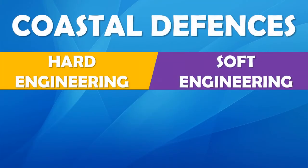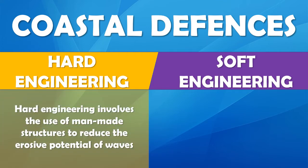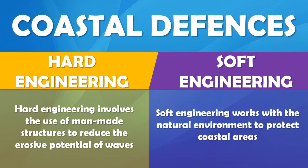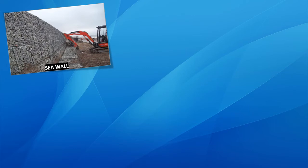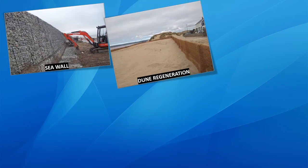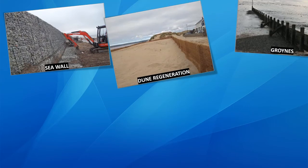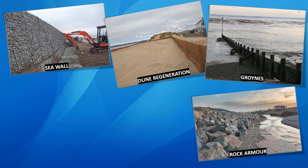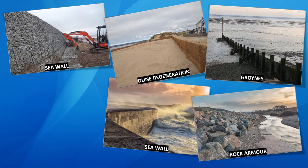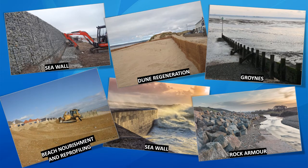Coastal defences can either be hard or soft engineering. Hard engineering involves the use of man-made structures to reduce the erosive potential of waves. Soft engineering works with the natural environment to protect coastal areas. There are lots of different coastal management strategies, from sea walls, dune regeneration, groynes, rock armour, and beach nourishment and reprofiling.